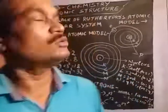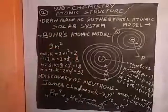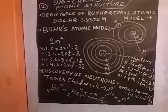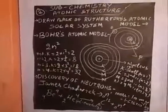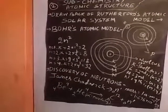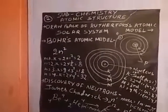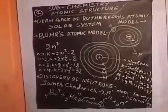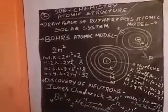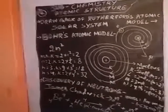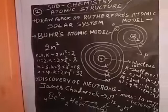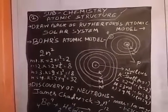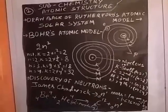Hello students, I am going to explain chemistry atomic structure part two. Today we will discuss the drawback of Rutherford's atomic model or solar system. Rutherford compared the electrons and protons as a solar system where the sun is the central nucleus, and electrons or planets are revolving around the nucleus.